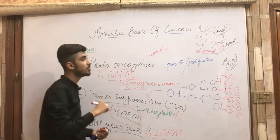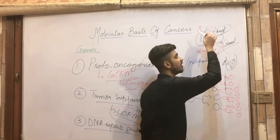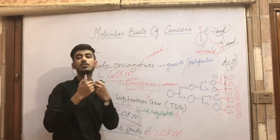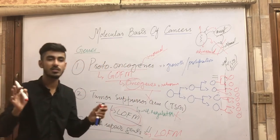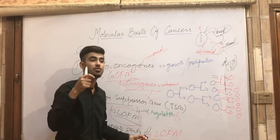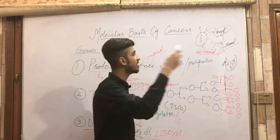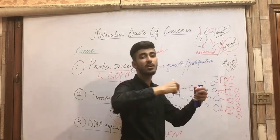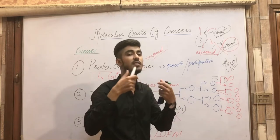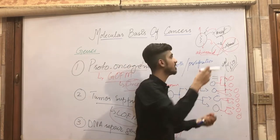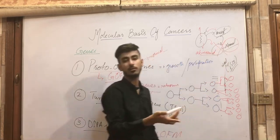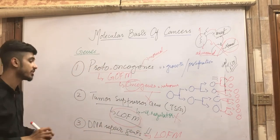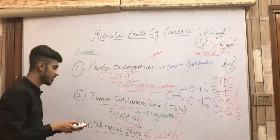With loss of function mutation in DNA repair genes, their function is lost, so they will not carry out DNA repair. When the DNA is not repaired, the cell will not become normal. That is why there is also loss of function mutation in DNA repair genes.